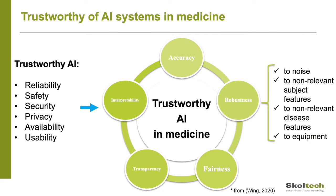When can we trust such a system, or in other words, what makes such a system trustworthy? Based on the standard definition of trustworthiness in industry, where the main points are that a system must be reliable, safe and secure, we clarify this concept for medicine. The system must also be accurate — it should work with performance equal or close to equal compared to clinicians. The system must be robust, meaning robust to data noise, to non-relevant subject features, to non-relevant disease features, and to equipment.